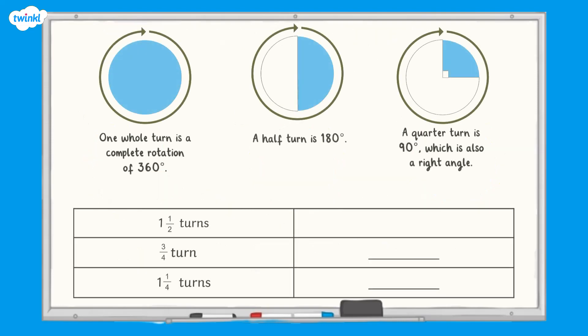We can describe turns in degrees. For example, in one and a half turns there are 540 degrees. This is because one whole turn is a complete rotation of 360 degrees. And if you add a half turn, which is 180 degrees, it will equal 540 degrees.